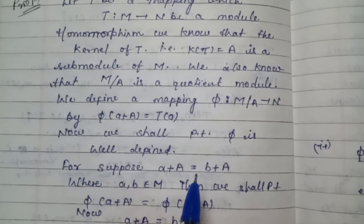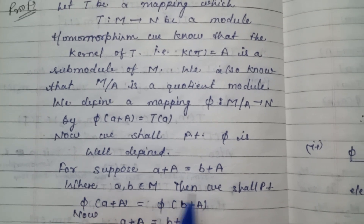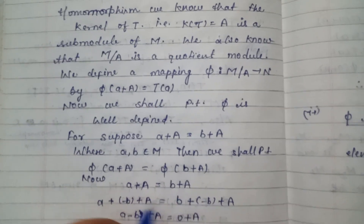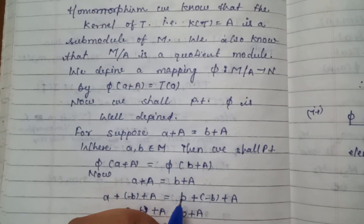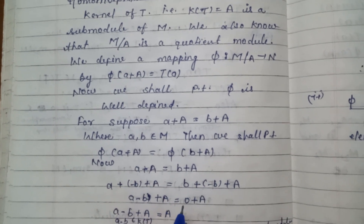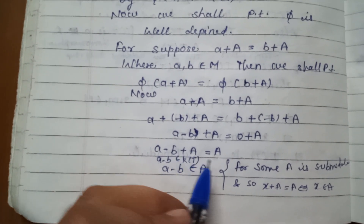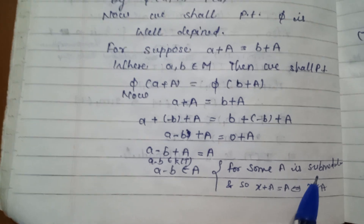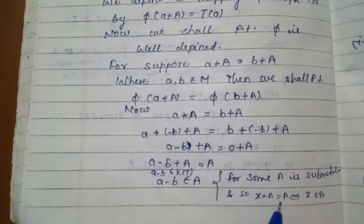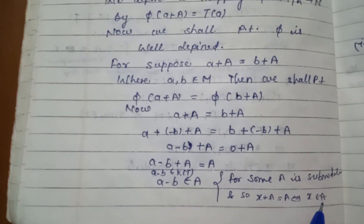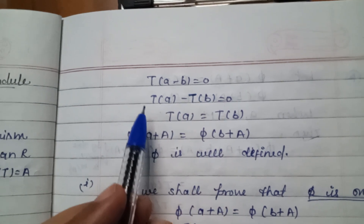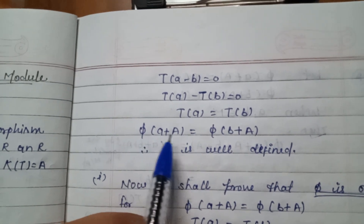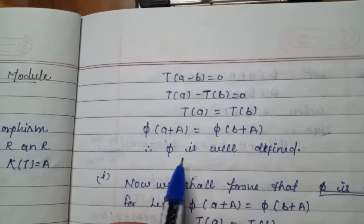Now we shall prove that phi is well-defined. Suppose a + A = b + A, where a, b belong to M; we shall prove that phi(a + A) = phi(b + A). Since a + A = b + A, we get a - b + A = 0 + A, so a - b belongs to A, which means a - b belongs to kernel of T. Therefore T(a - b) = 0, so T(a) - T(b) = 0, or T(a) = T(b). Hence phi(a + A) = phi(b + A), and phi is well-defined.